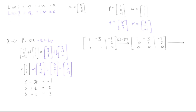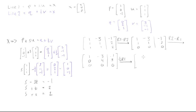Next, eliminate the leading 1 in row two by computing row two minus row one. Row two becomes [0, 4 | 3]. To get row echelon form, we need a leading 1, so we multiply row two by one-fourth, giving [0, 1 | 3/4].